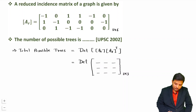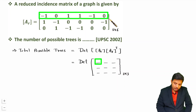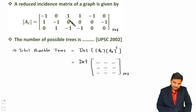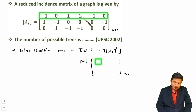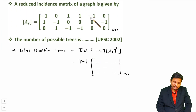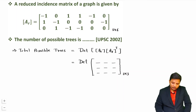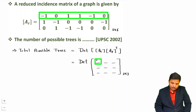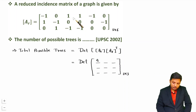For the first diagonal element, multiply the first row by itself. Since minus 1 times minus 1 equals plus 1, and 1 times 1 equals plus 1, we get four non-zero products summing to 4. For the second diagonal element, multiply the second row by itself, giving 3. For the third diagonal element, multiply the third row by itself, also giving 3.